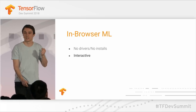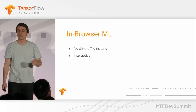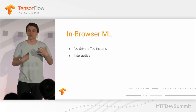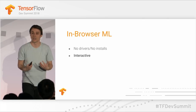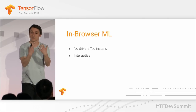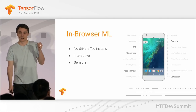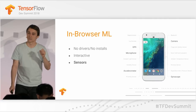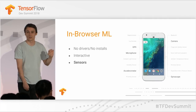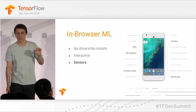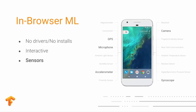Another thing is the browser is highly interactive, so the user is going to be engaged with whatever you're building. Another big thing is that browsers have access to sensors like the microphone, the camera, and the accelerometer — and all of these sensors are behind standardized APIs that work on all browsers.